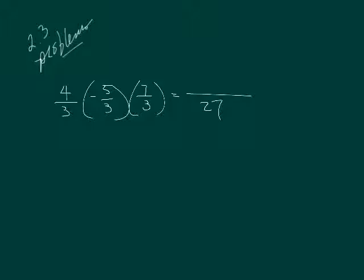And then I'm going to multiply my top numbers. 4 times 5 is 20, 20 times 7 is 140. And because I have one negative there, that 1 is an odd number, so my answer is negative.